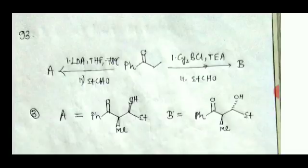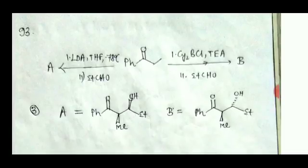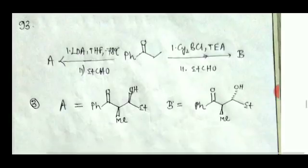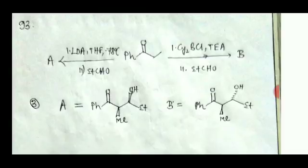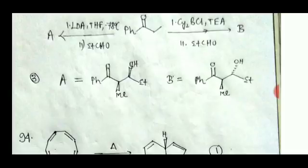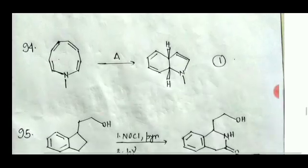Question number 93 is a standard reaction directly from Clayden. When this compound is treated with LDA you get the Z-enolate, which gives the syn-aldol product. When a large cyclohexyl group is present on boron, you get the trans-enolate and the anti-aldol product. Option 3 is the correct answer.